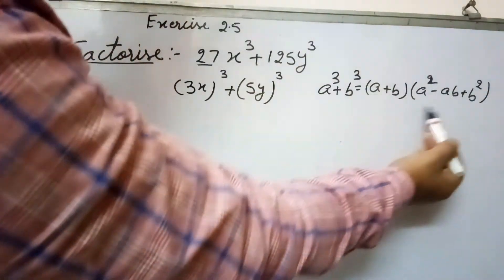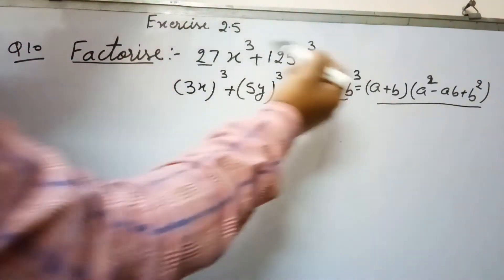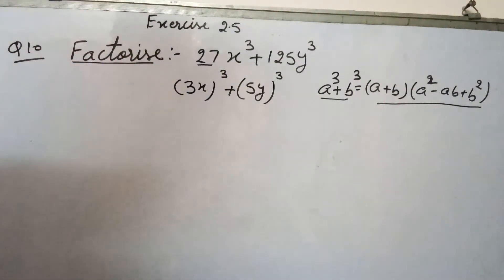So this is the identity used when we have to factorize a cubic polynomial in this form: (a+b)(a² - ab + b²). These are the factors.